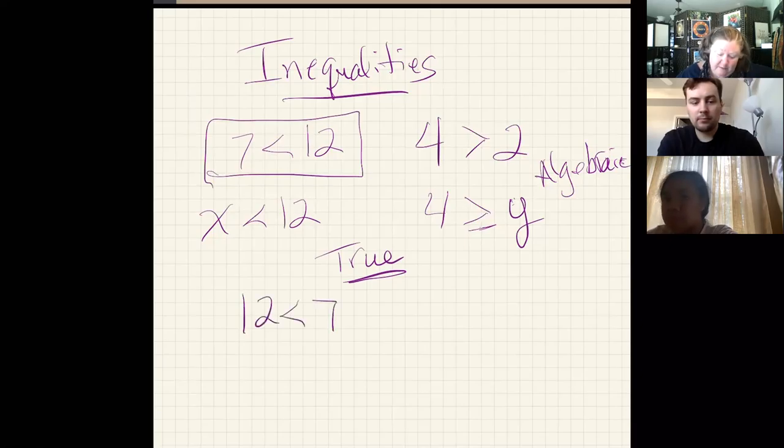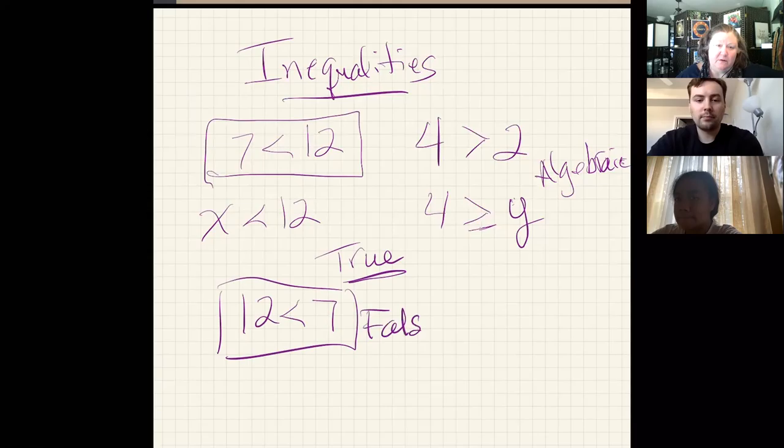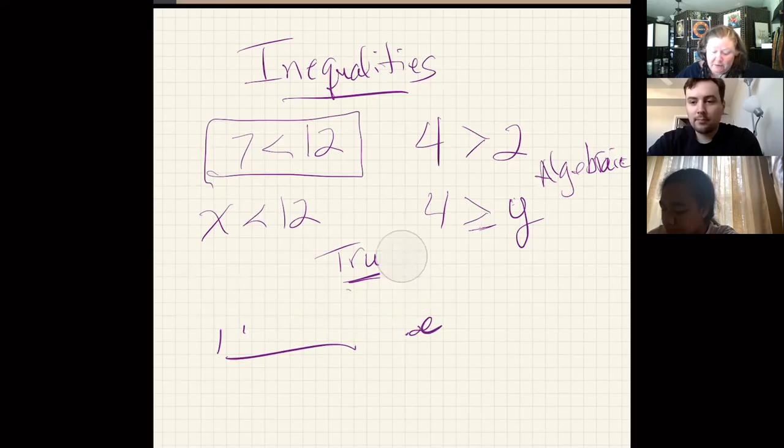So this inequality is true. 7 is less than 12. If I wrote this inequality the other way, 12 is less than 7, you would all tell me that's not true. That it doesn't work. And so this would be called a false inequality or not true.